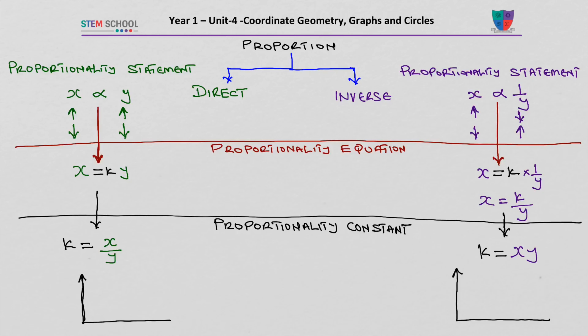If you plot x against y, the graph will go through the origin for direct proportionality — that's the graph of direct proportionality. But if you plot x against y for inverse proportionality, the graph will be a curve.